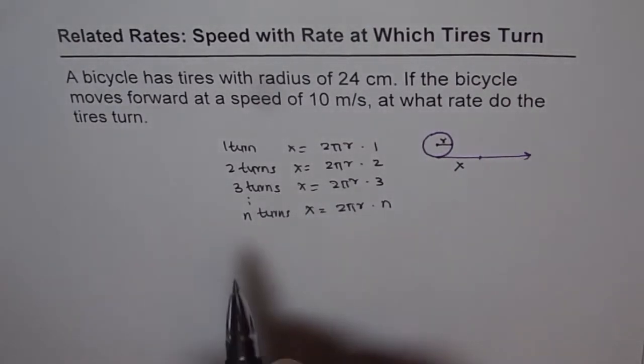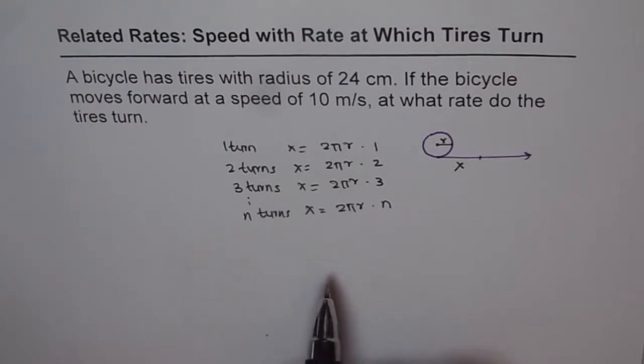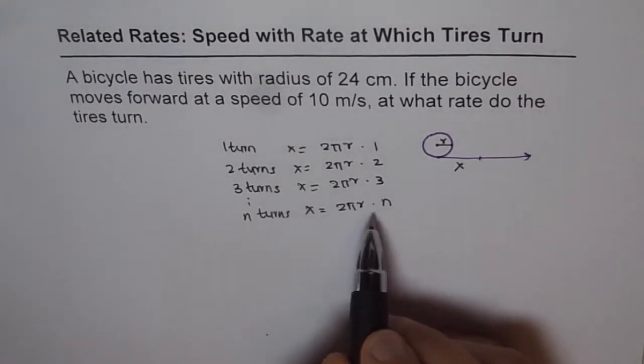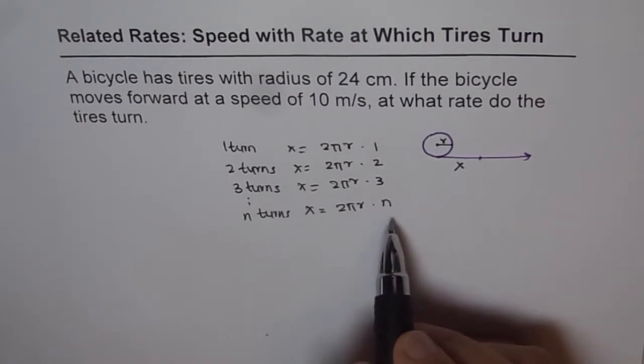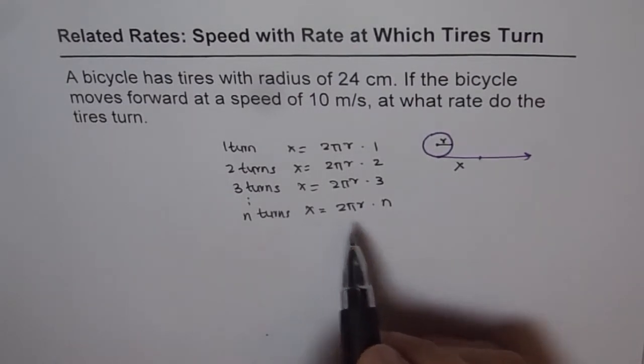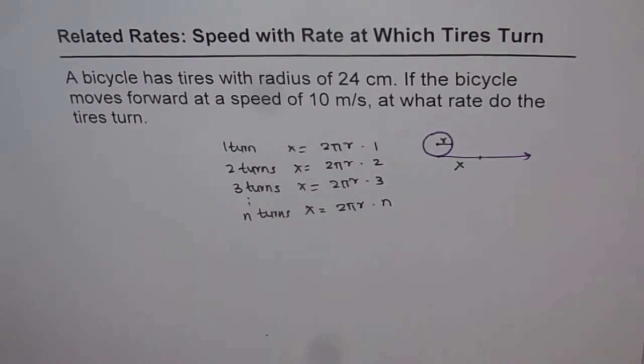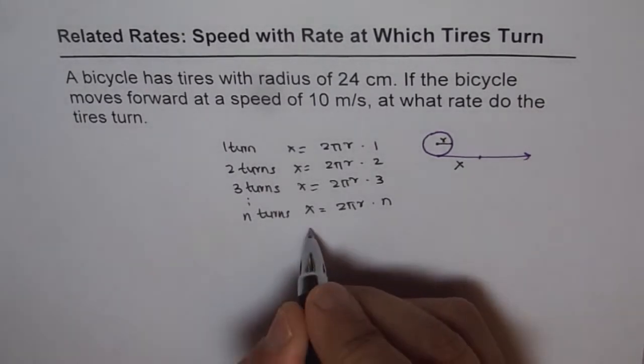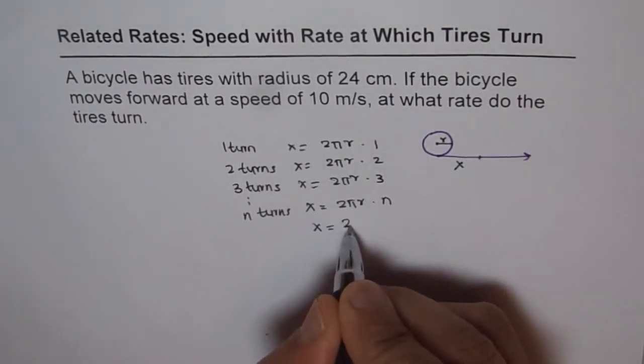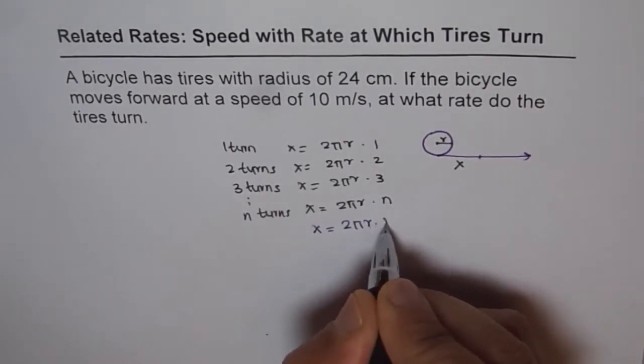In all rate of change problems, what you need to do is figure out a relation between the two and then find rate of change of one knowing the other. Now we have a relation here, so let's start solving the problem given this relation. We have x equals 2πrn.